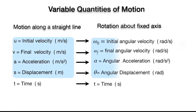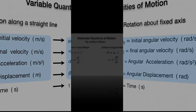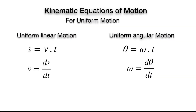Out of these five variables, four are vector quantities. Now let's check out the kinematic equations of motion for uniform motion. In linear motion, uniform motion means motion with a constant velocity — along a straight line in a particular direction. In rotational motion, uniform angular motion means motion with constant angular velocity omega. In this case, the angular displacement is given by theta = omega × t, where angular velocity is the rate of change of angular displacement with time.